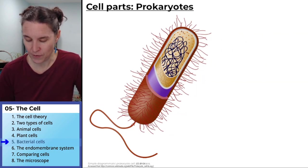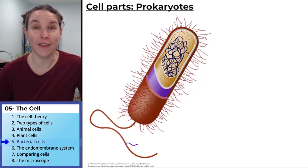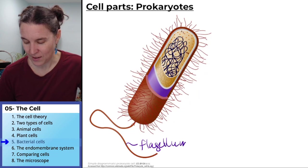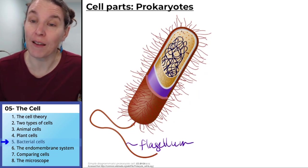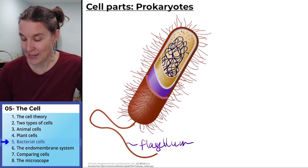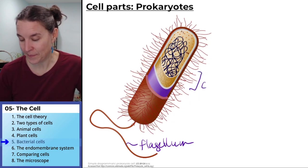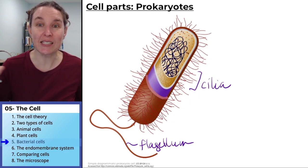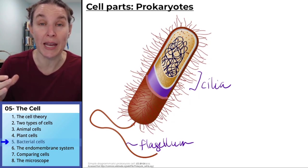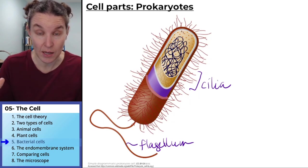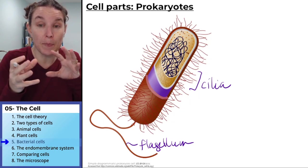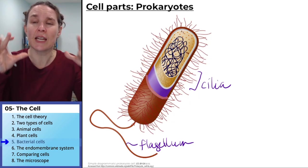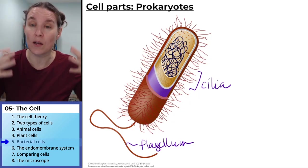We can see flagella — one flagellum — and cilia, multiple cilia. Cilia and flagella are both structures made out of cytoskeleton, but with different functions and different structures. We have cilia covering the whole cell body.